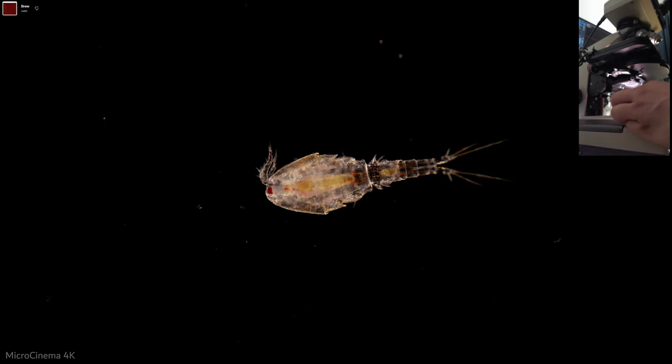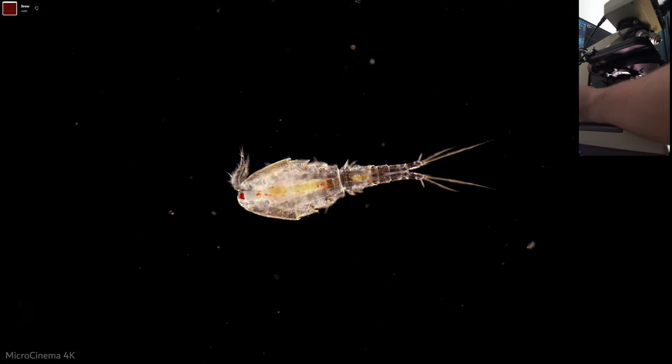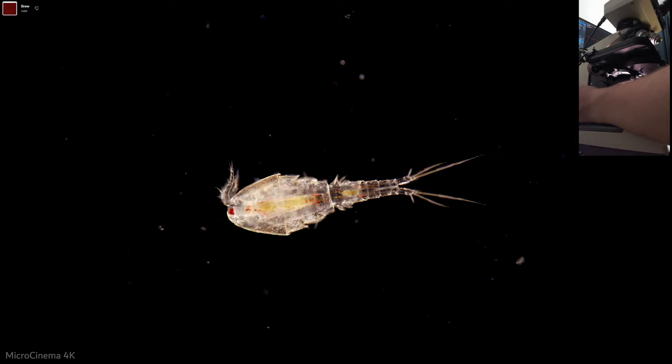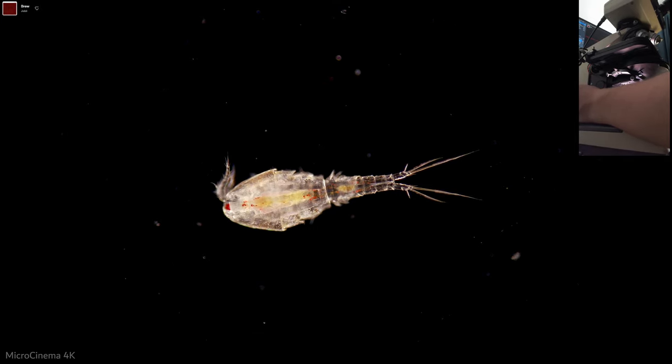And then I'm just going to bump up my ISO on the camera so we get a nice exposure on this copepod. And so here we are, I'm using my 4X S plan Apo lens and we're getting just a beautiful inky black dark field with this wonderfully exposed copepod.